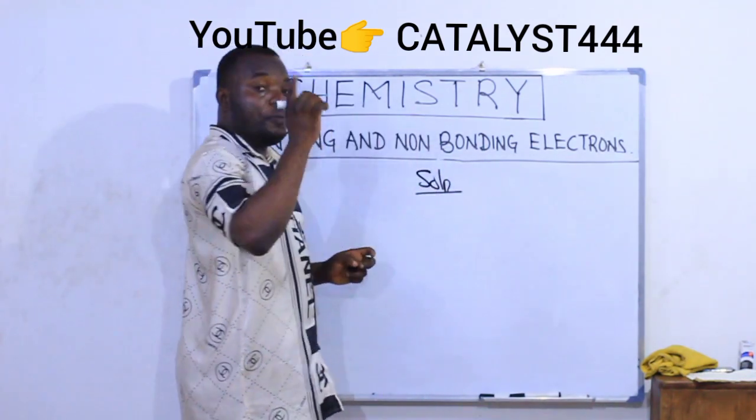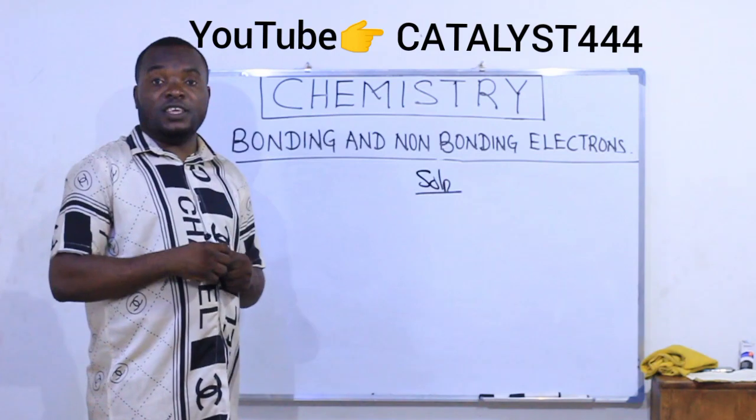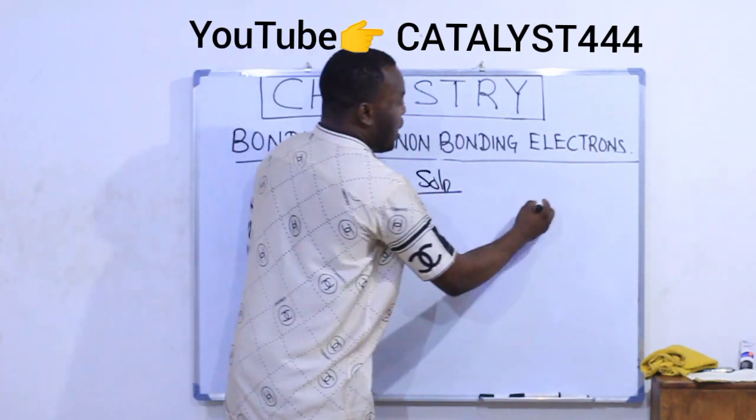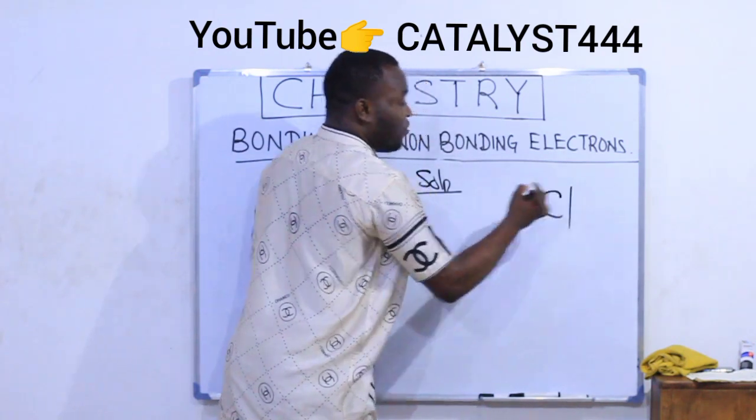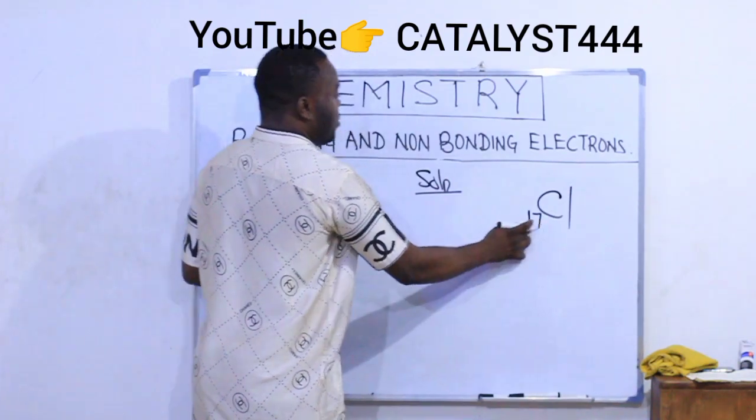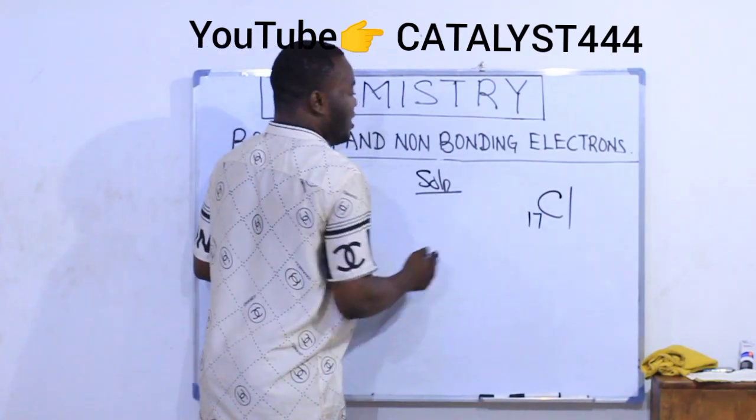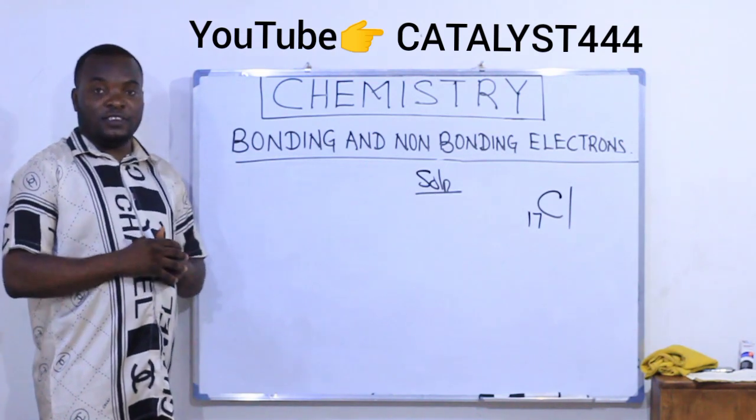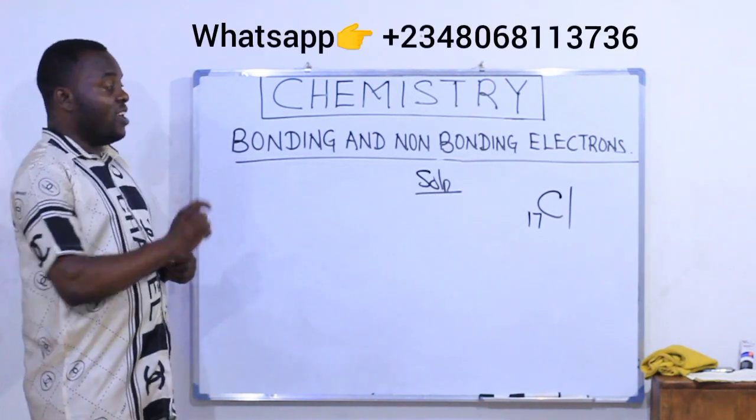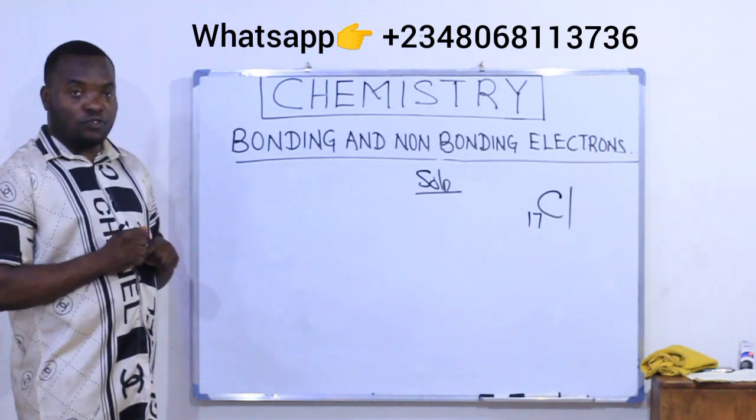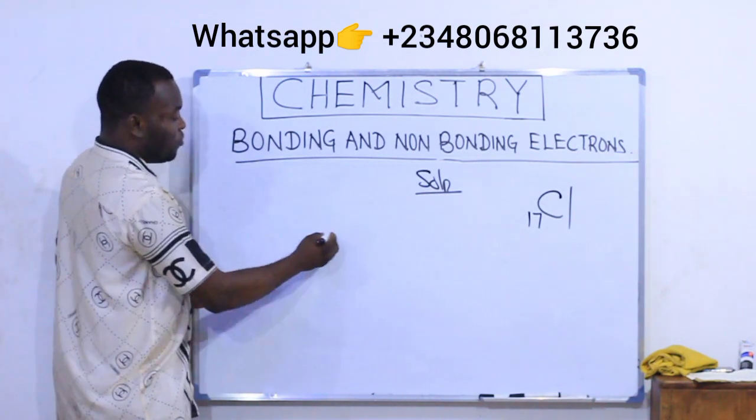The atomic number of the element is the first thing you should know. If we count the first 20 elements in order, chlorine is number 17. So chlorine is the 17th element, meaning the atomic number is 17. It means there are a total of 17 electrons in a chlorine atom. Let's quickly draw the structure.